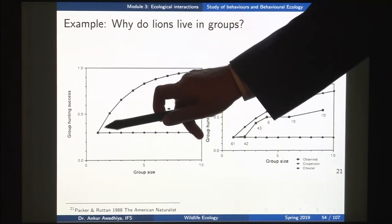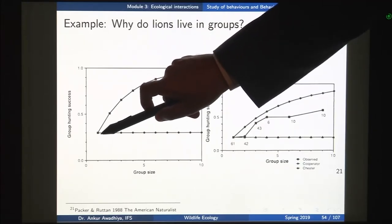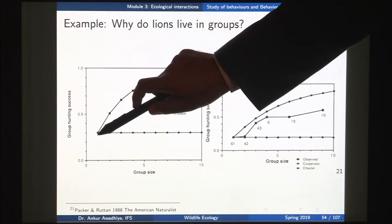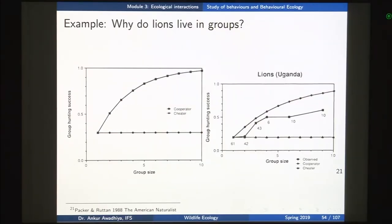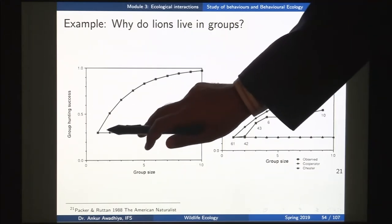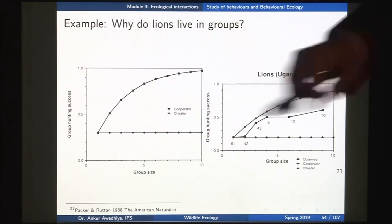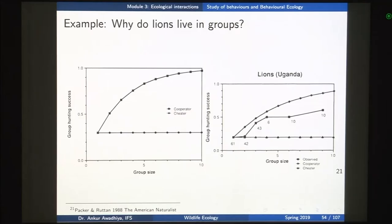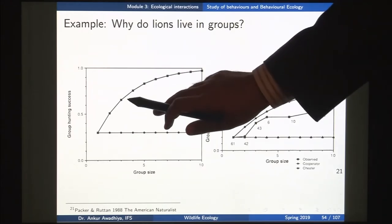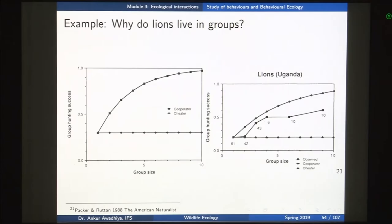If there is only one lion in the group, the group hunting success is only about 0.3, meaning roughly 1 out of 3 hunts succeeds. If you have 2 lions, the hunting efficiency increases from 0.3 to 0.5 — food is obtained roughly 50 percent of the time. As the size of the group increases and if they are able to cooperate fully, the group hunting success becomes closer and closer to 1.